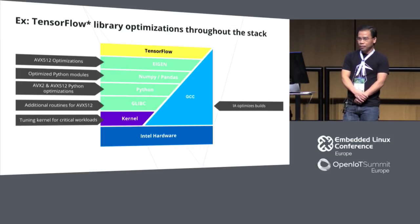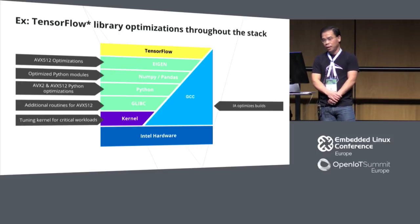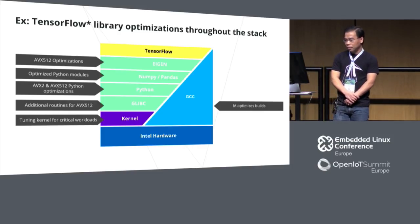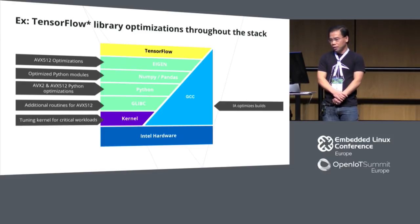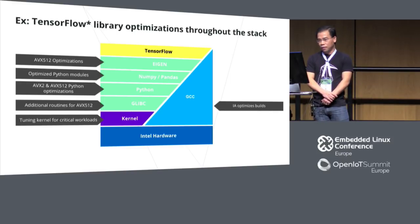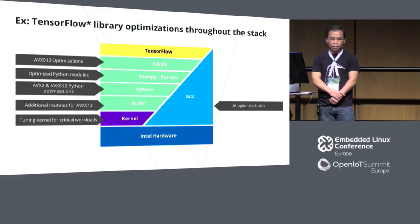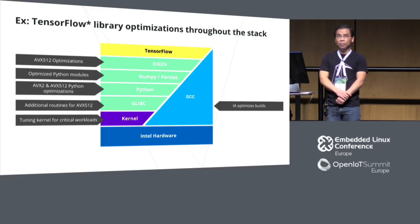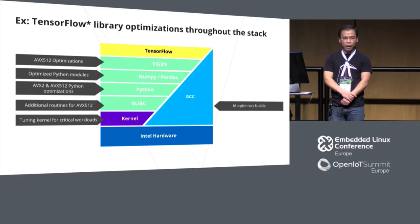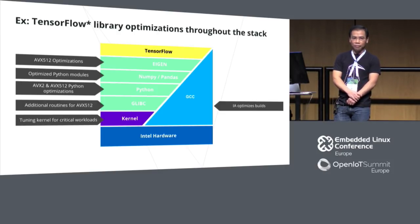Here's an example of optimization work we do for the TensorFlow library. At the kernel level, we tune the kernel for critical workloads. For the glibc library, we add additional routines for AVX-512. For Python, we add AVX2 and AVX-512 optimizations, and we optimize modules like NumPy and pandas. We also have AVX-512 optimizations for the Eigen C++ template library. We use the latest GCC compiler with flags that take advantage of the available hardware.